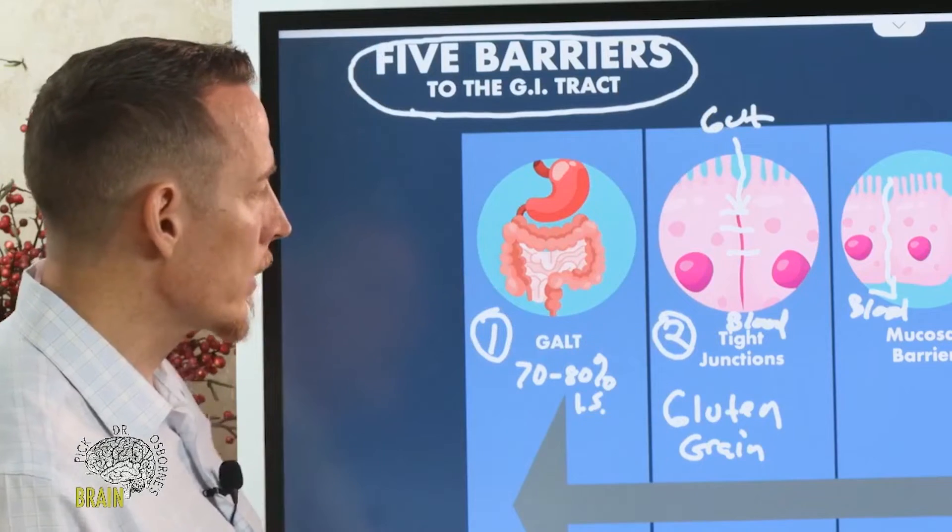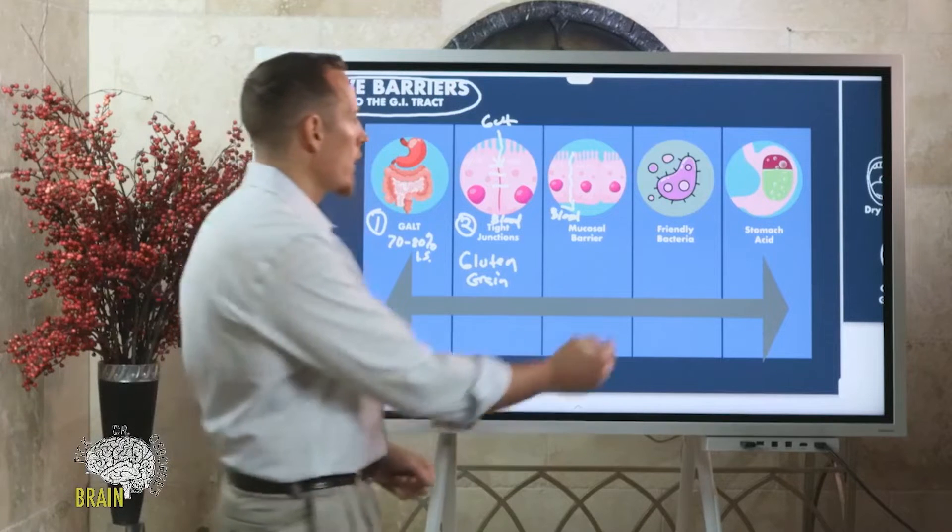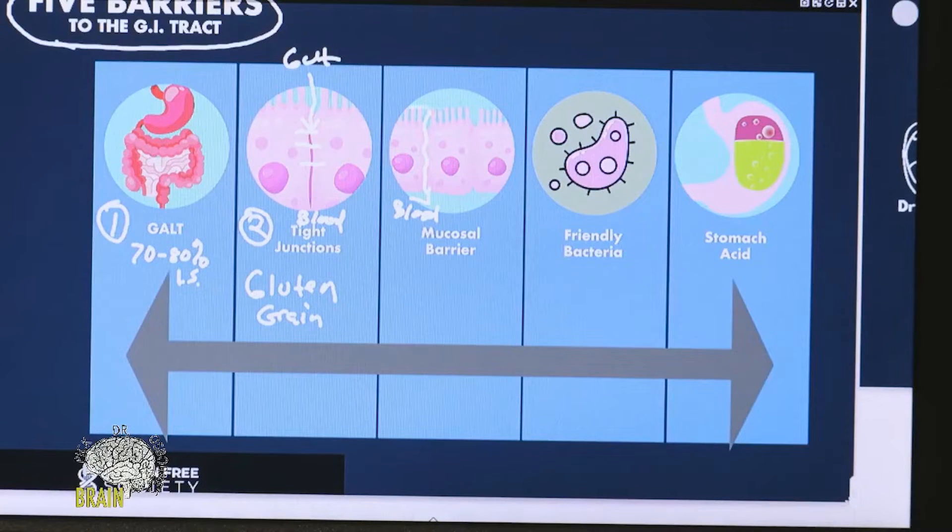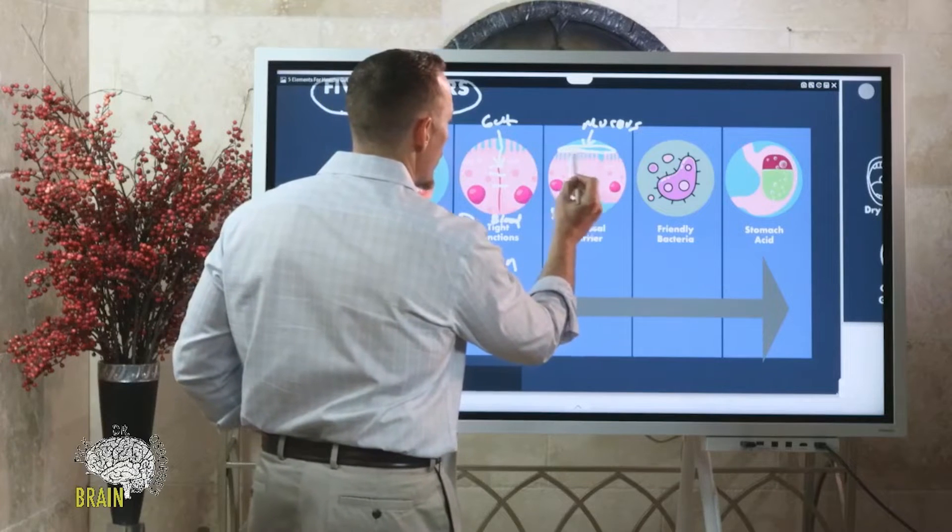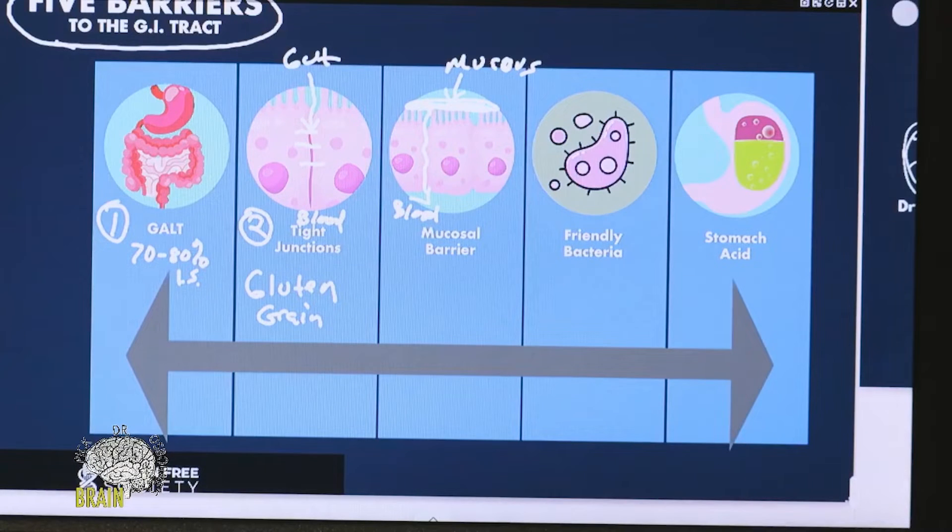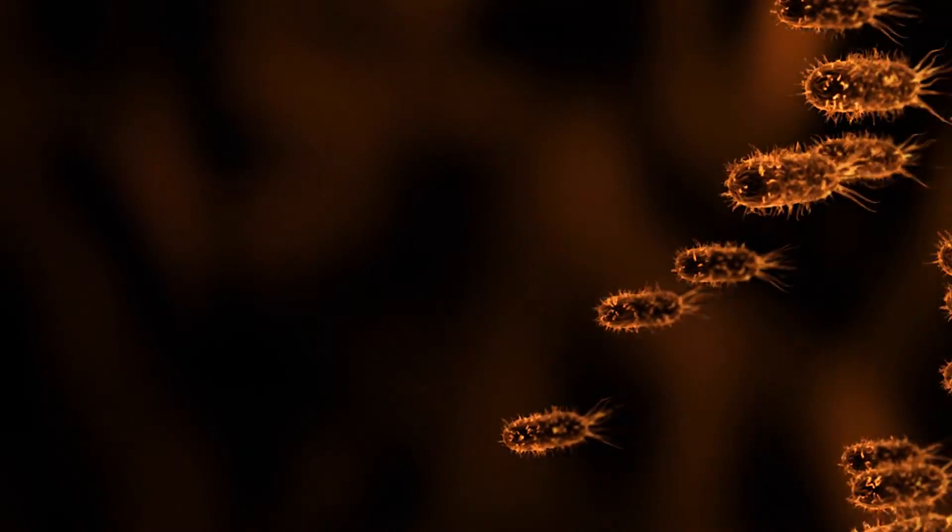Then we have what's called the mucosal barrier. On the surface of your GI cells there's this layer of mucus. That mucus is very critical, very important. It's a physical barrier. Number one, it lays down a physical barrier so things can't penetrate in. Number two, it serves as a home for good bacteria.